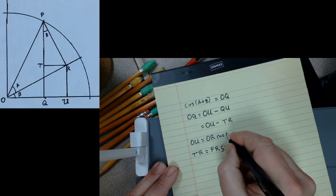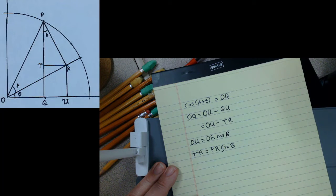And oops, right here I think I said B but I wrote A. So that's cosine B there.